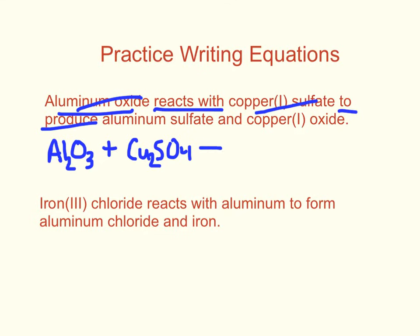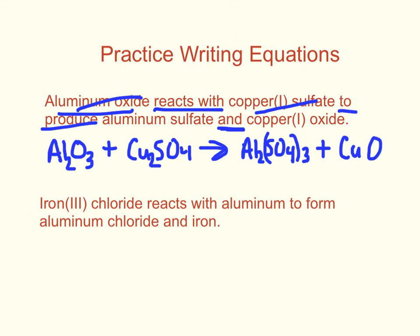To produce — put an arrow. Aluminum sulfate: don't just copy subscripts from one side to the other; check charges each time. Aluminum is Al, sulfate is SO₄ — aluminum has a plus three, sulfate has a minus two, they don't cancel, so criss-cross: Al₂(SO₄)₃. Then a plus sign. Copper(I) oxide: copper is Cu, oxide is O — copper is plus one, oxygen is minus two, so Cu₂O. There's the skeleton equation.